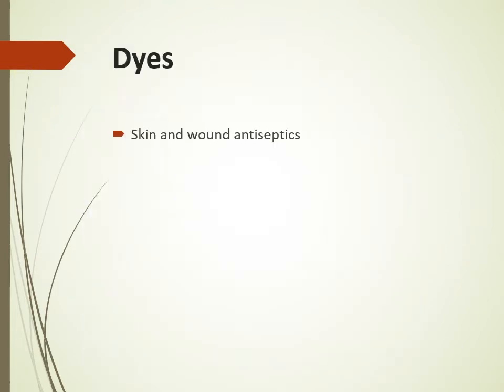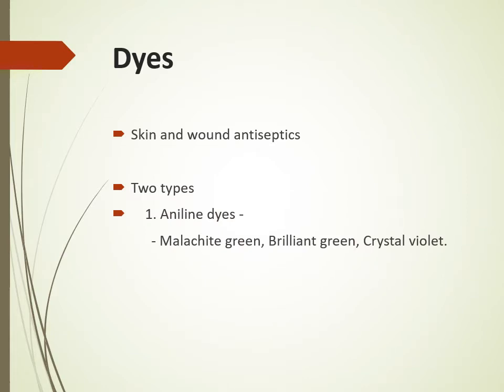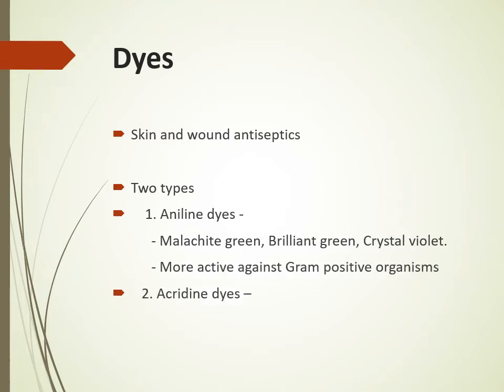Dyes are useful for skin and wound antiseptics. There are two types: aniline dyes, examples being malachite green, brilliant green, and crystal violet, which are more active against gram-positive organisms; and acridine dyes, examples being proflavin, acriflavine, and euflavine.